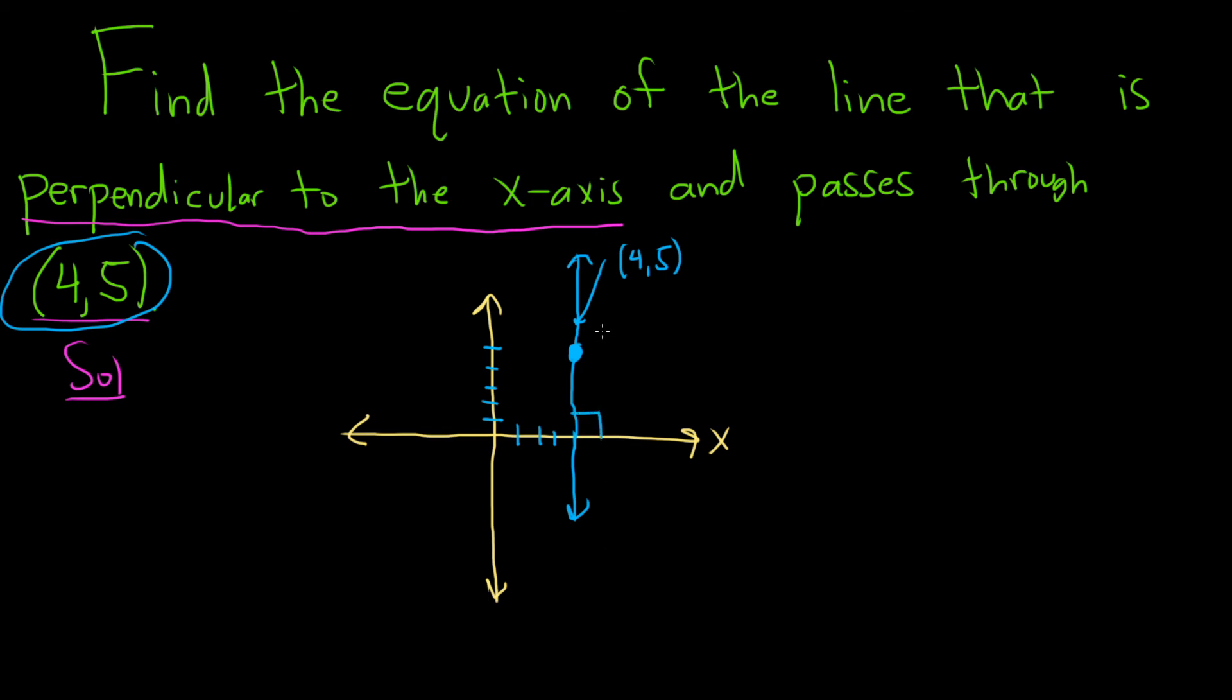Oh, but now we have the answer. This is a vertical line and its equation is x equals—that's whatever number is here—so x equals 4. And that is the answer.